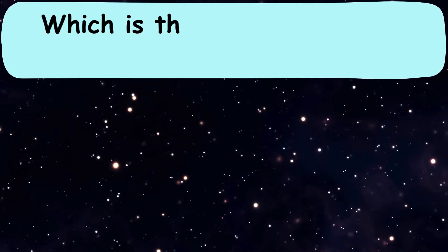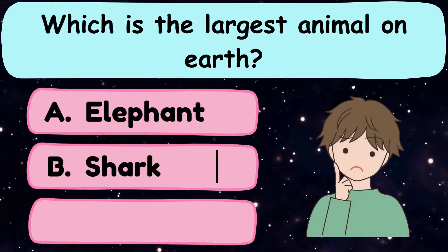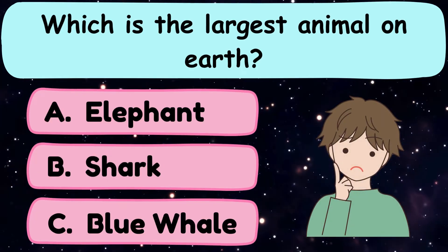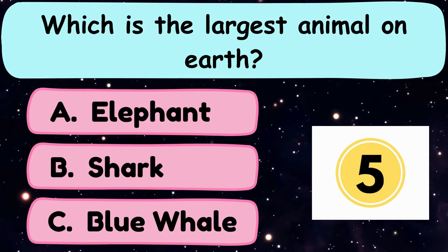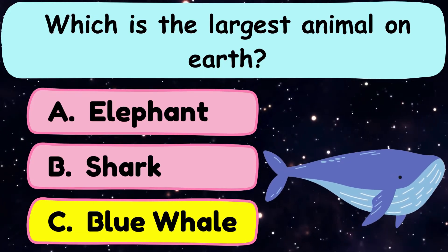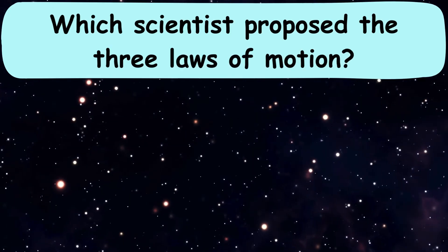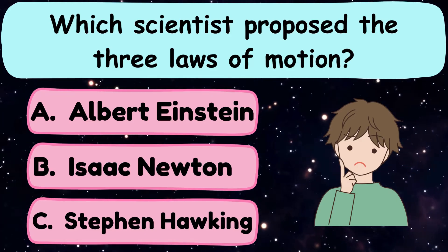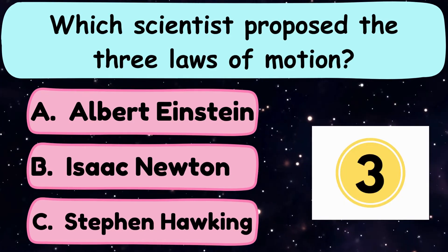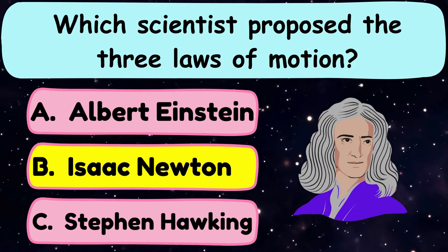Question number 17. Which is the largest animal on earth? A. Elephant, B. Shark, or C. Blue Whale? Question number 18. Which scientist proposed the three laws of motion? A. Albert Einstein, B. Isaac Newton, or C. Stephen Hawking? And the correct answer is option B. Isaac Newton.